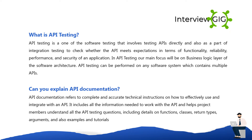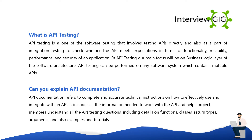What is API testing? API testing is a type of software testing that involves testing APIs directly, and also as part of integration testing, to check whether the API meets expectations in terms of functionality, reliability, performance, and security of an application. In API testing, our main focus will be on the business logic layer of the software architecture.